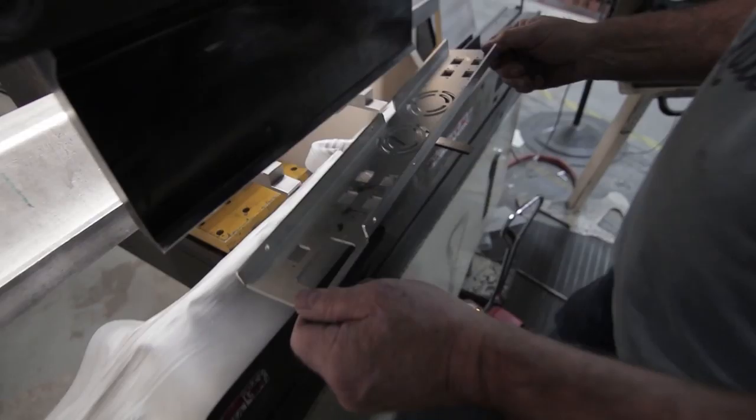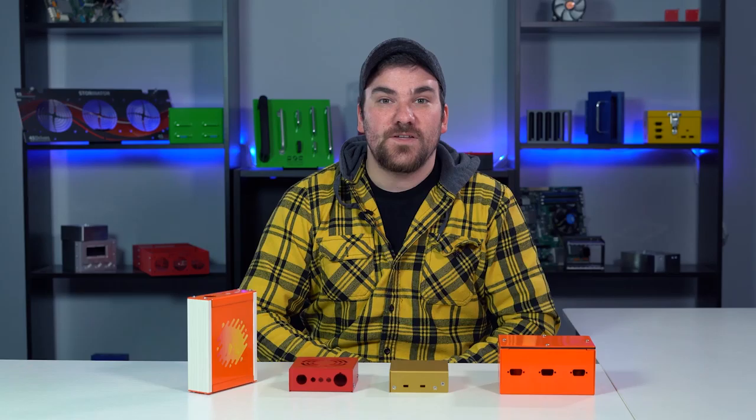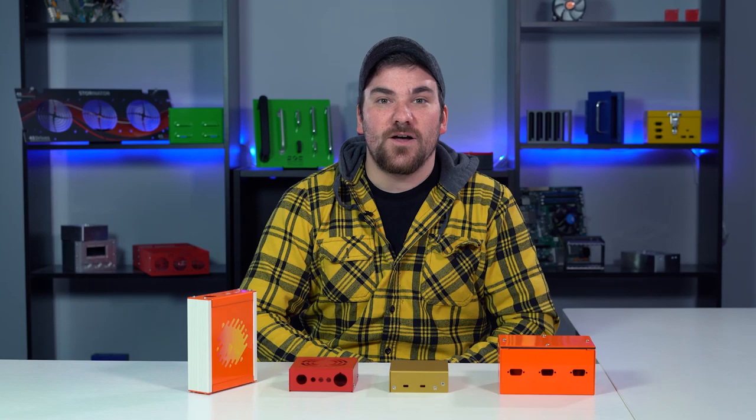ProtoCase can build your completely customized electronic enclosure or part in 2-3 days in any quantity that you require. There are many common enclosure styles that each suit particular applications and Cody went over all of these common enclosure styles in a video which we've got linked below. But today, I want to talk about three different enclosure styles that feature extruded aluminum.